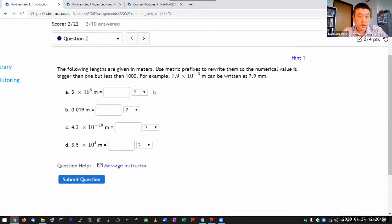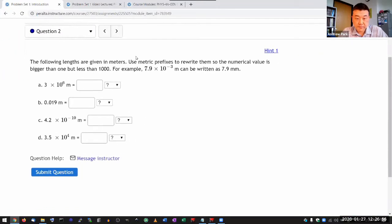So here's question 2. It says, the following lengths are given in meters, use metric prefixes to rewrite them so that the numerical value is bigger than 1 but less than 1,000.